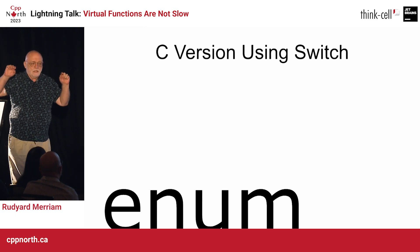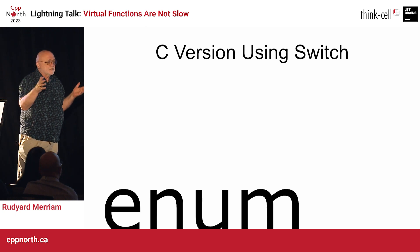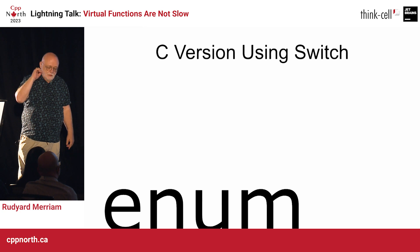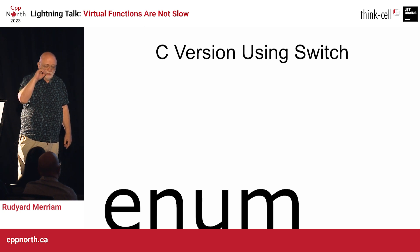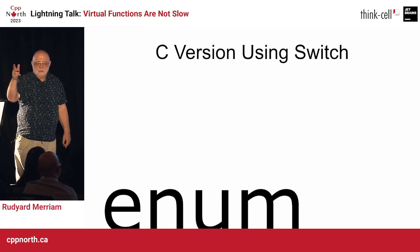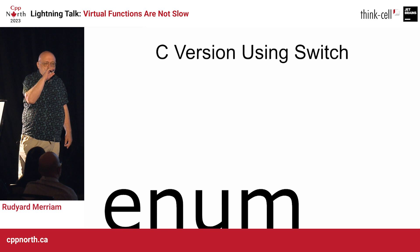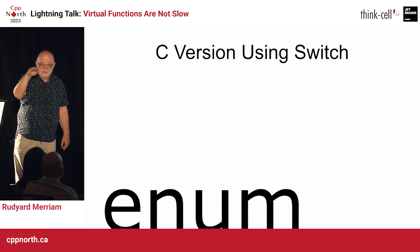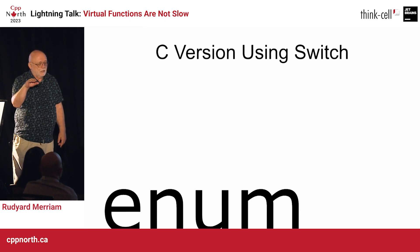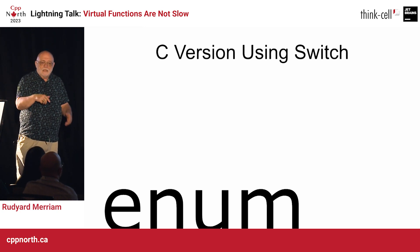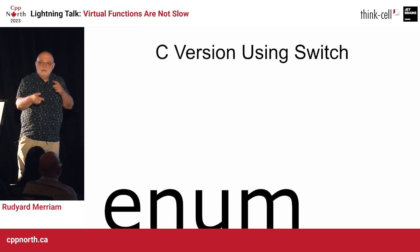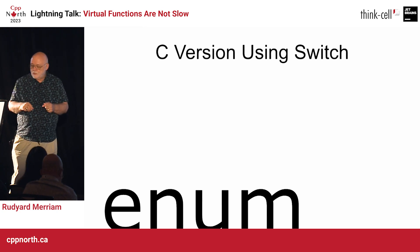What it did was create an enum for the C version, which is either analog or digital. Then there's a structure which uses the enum as a flag and the pin number for the output. That simply walks through — you create an array with those and walk through it, doing the output for each of them.